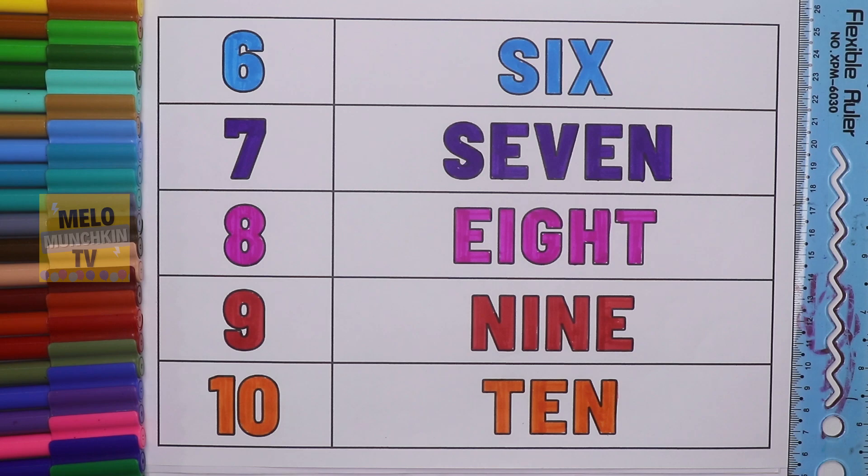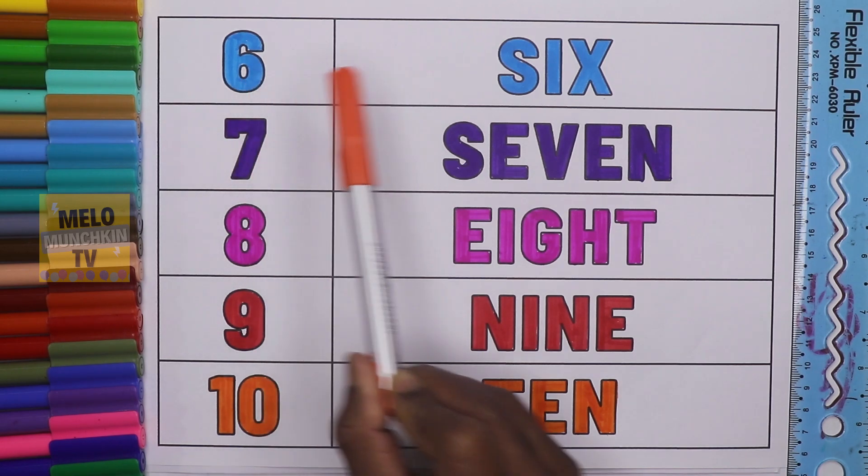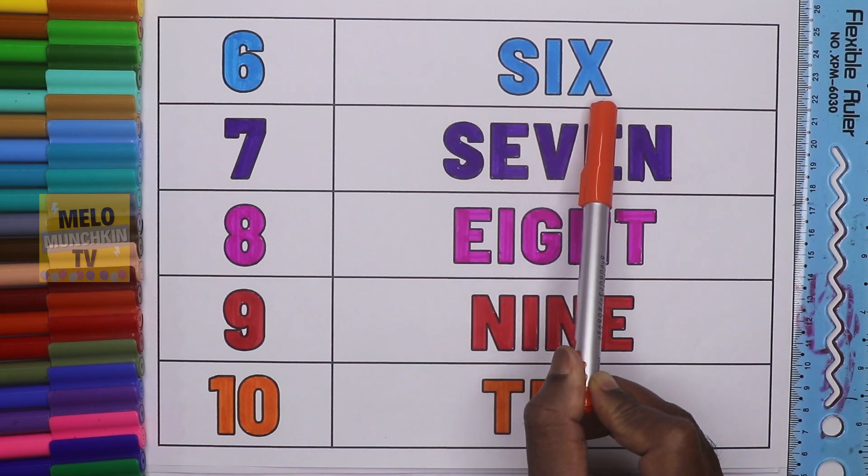So hence we've completed our numbers from six to ten and the number names as well. Let's revise. This is six. Number six. S-I-X. Six.